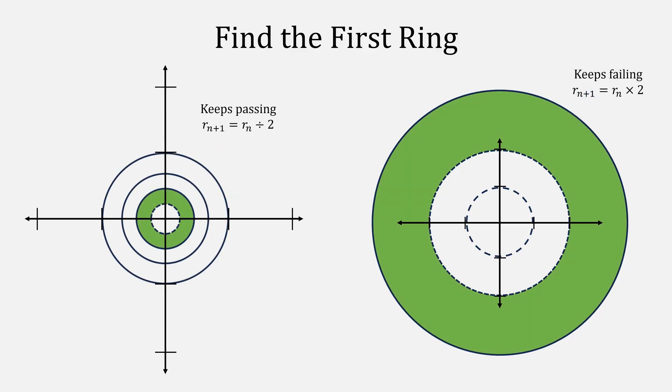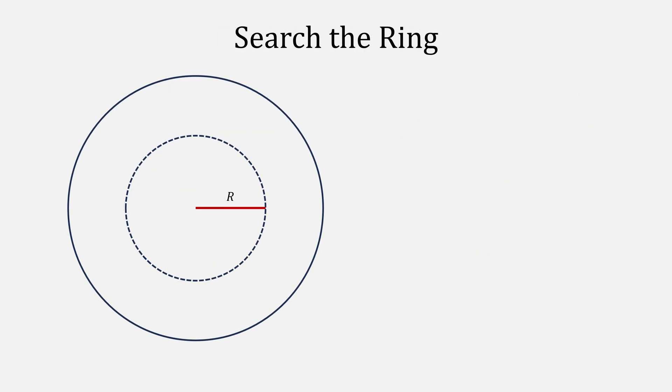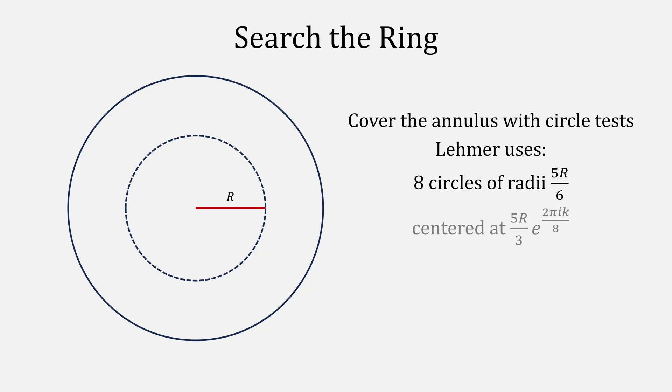In both cases, we start with the unit circle. When it keeps passing, we keep halving the radius and trying again until it fails. When it keeps failing, we double the radius and try again until it passes. Once we found a ring that contains a root, we then cover that annulus with circles. Lemmer used eight evenly spaced circles of radii r times 5 sixths at this equation for their centers.